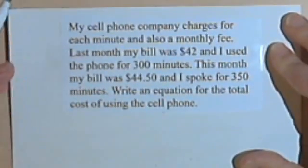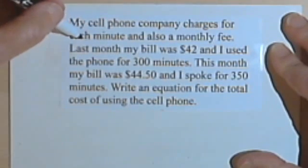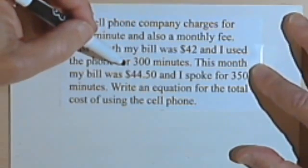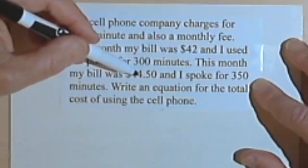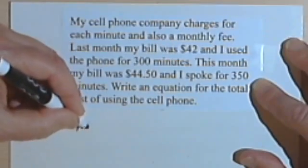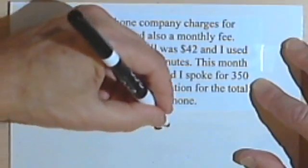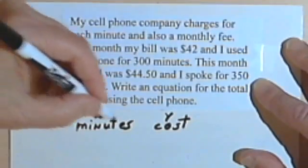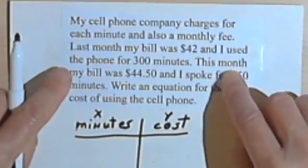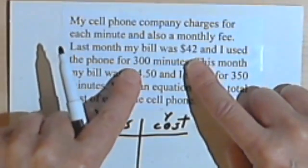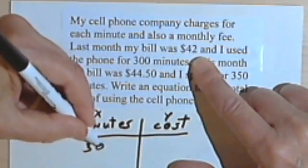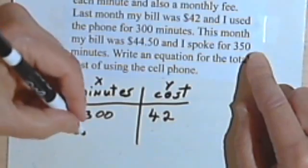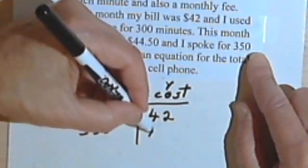So here's my cell phone company. My cell phone company charges for each minute and also a monthly fee. Last month my bill was $42 and I used 300 minutes. This month my bill was $44.50 and I spoke for 350 minutes. So I've got minutes and I've got cost. Now I'm going to think of the cost as y, because that's what I'm looking for. The minutes is x. And I'm given things I can turn into points. I've got 300 minutes and 42 dollars, so this pair of numbers goes together.